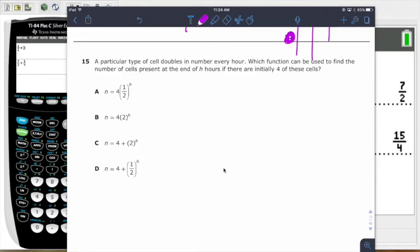This next one here, a particular type of cell doubles in number every hour. Which function can be used to find the number of cells present at the end of H hours if there are initially 4 of these cells. So think about this. We start out with 4 things, and then after 1 time, we double it. But then after 2 times, you would double it twice. Or after 3 times, you would double it 3 times. Kind of like that. So we're going to put, instead of like a number there, we're going to put a variable. We're going to say the number of hours. So that's doubling it for each one of the corresponding hours. And you start out at that 4. And that's actually going to be your equation.